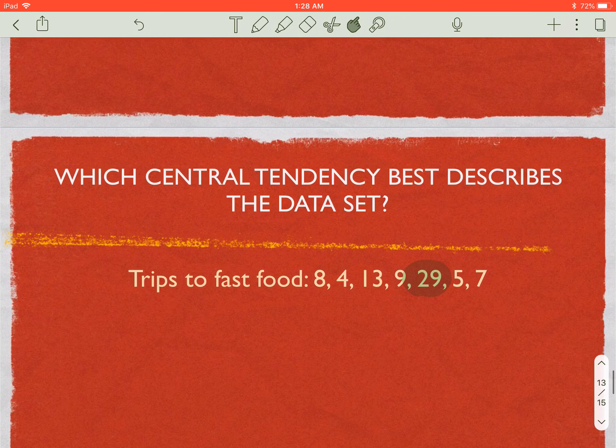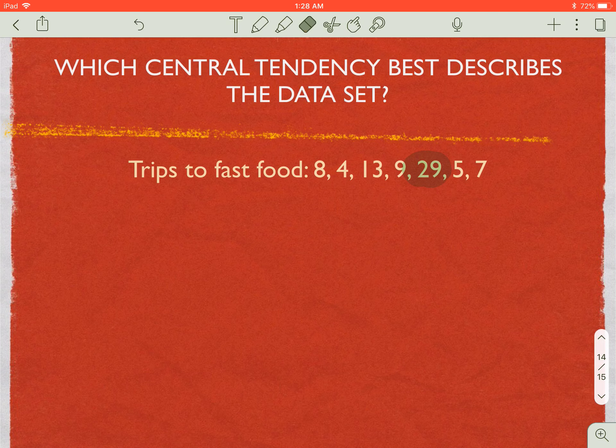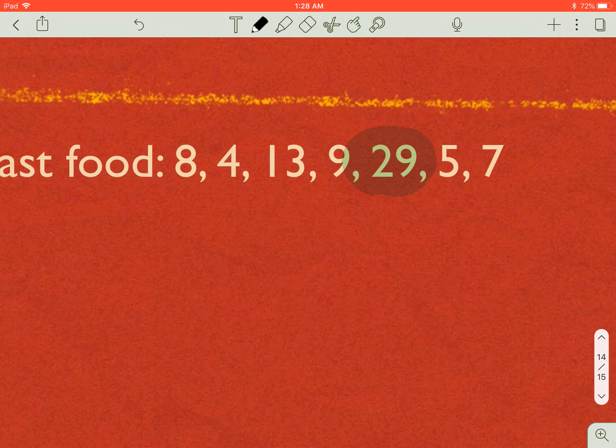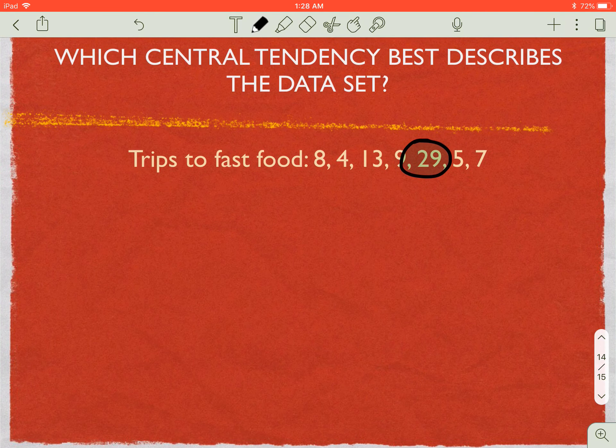And here, trips to fast food: 8, 4, 13, 9, 29, 5, and 7. We have an outlier right there. An outlier would skew the mean.